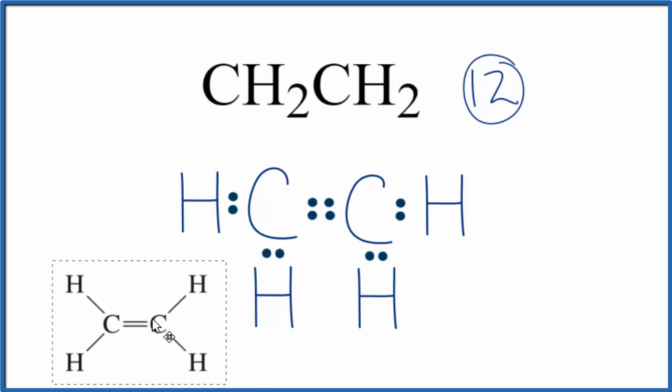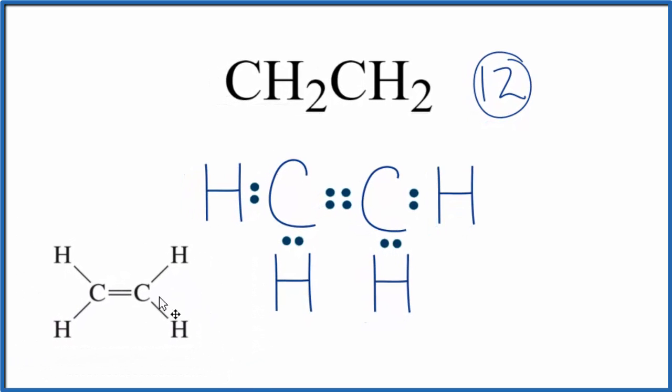Often you'll see the Lewis structure written like this here to show the double bond with the single lines and then the single bonds, and that the hydrogens will be spread out like this. If you looked at the molecular geometry, this is what it would look like.